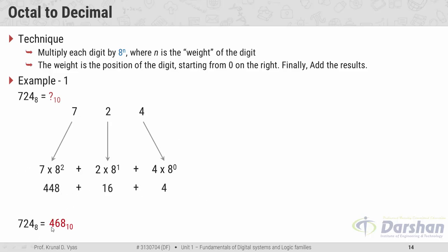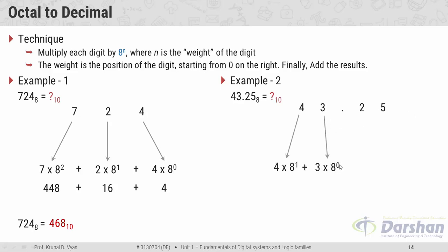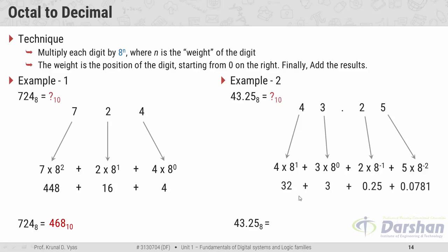Example 2 covers the fractional part: 43.25 in octal. The integer portion 43 is handled as before — 3 into 8 raised to 0, and 4 into 8 raised to 1. For the fractional part, we use negative powers: 2 into 8 raised to −1, and 5 into 8 raised to −2. Performing the calculations gives 35.3281 in decimal.